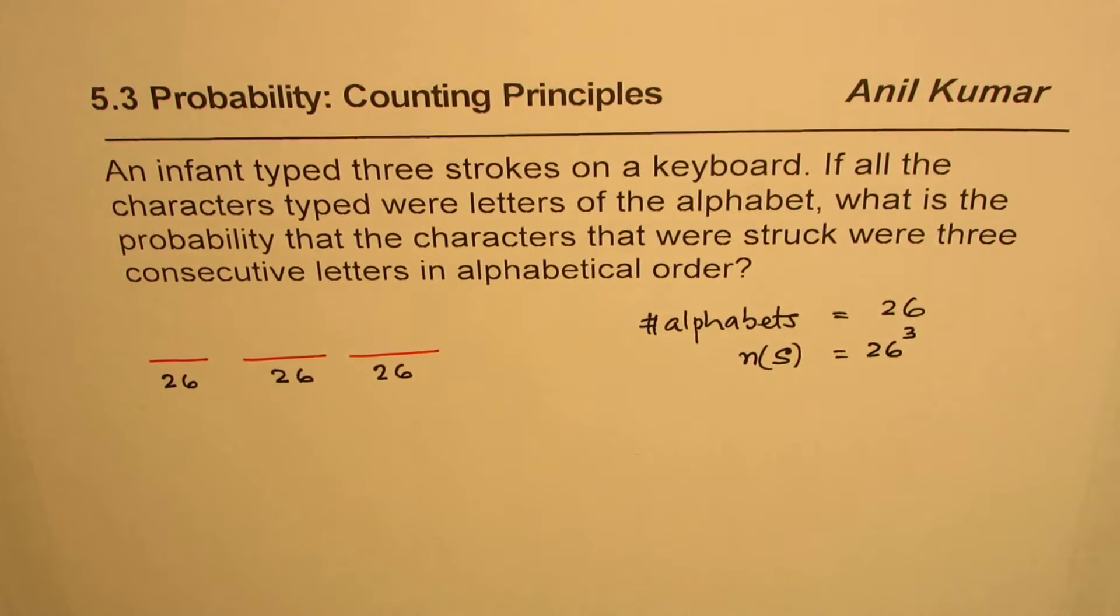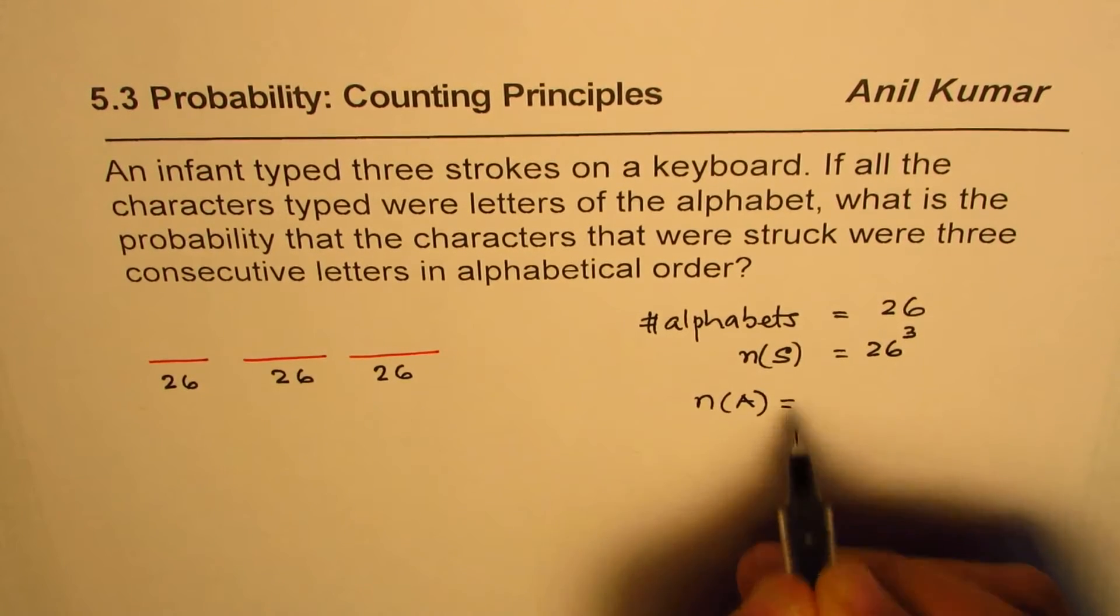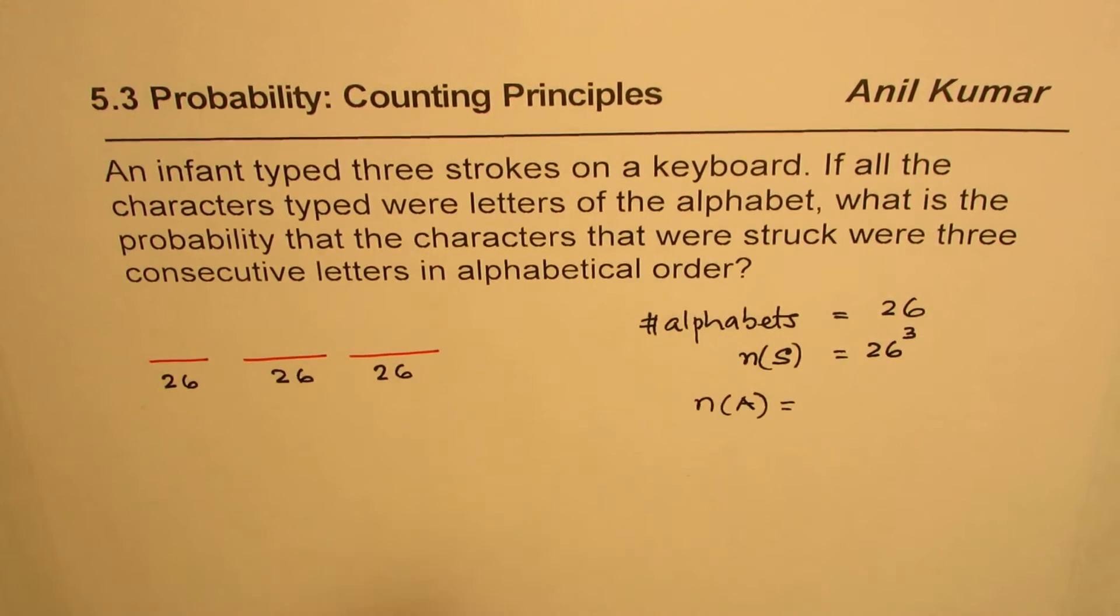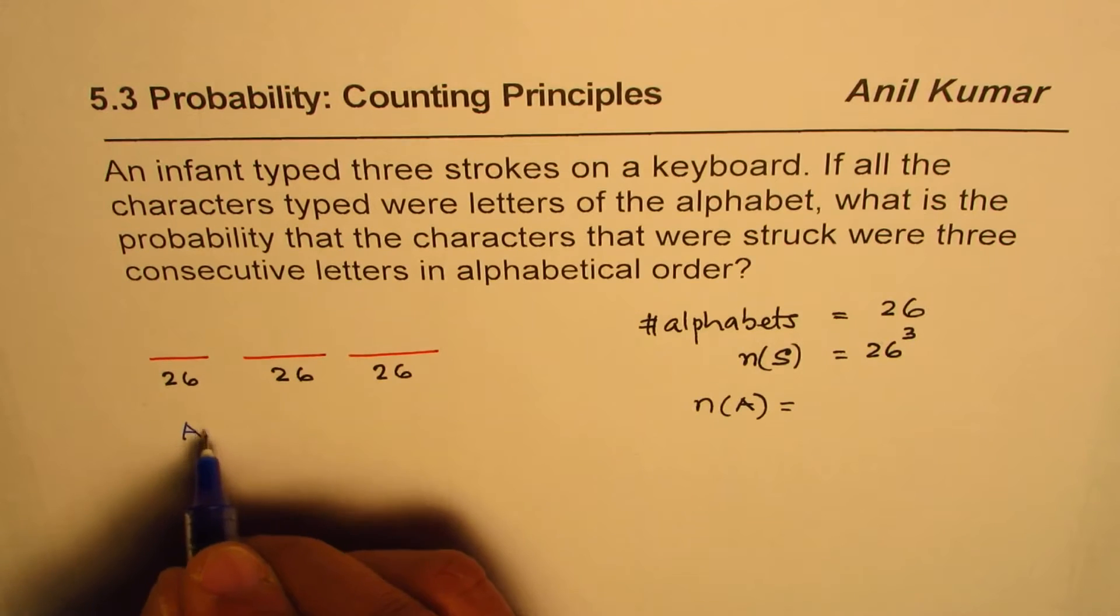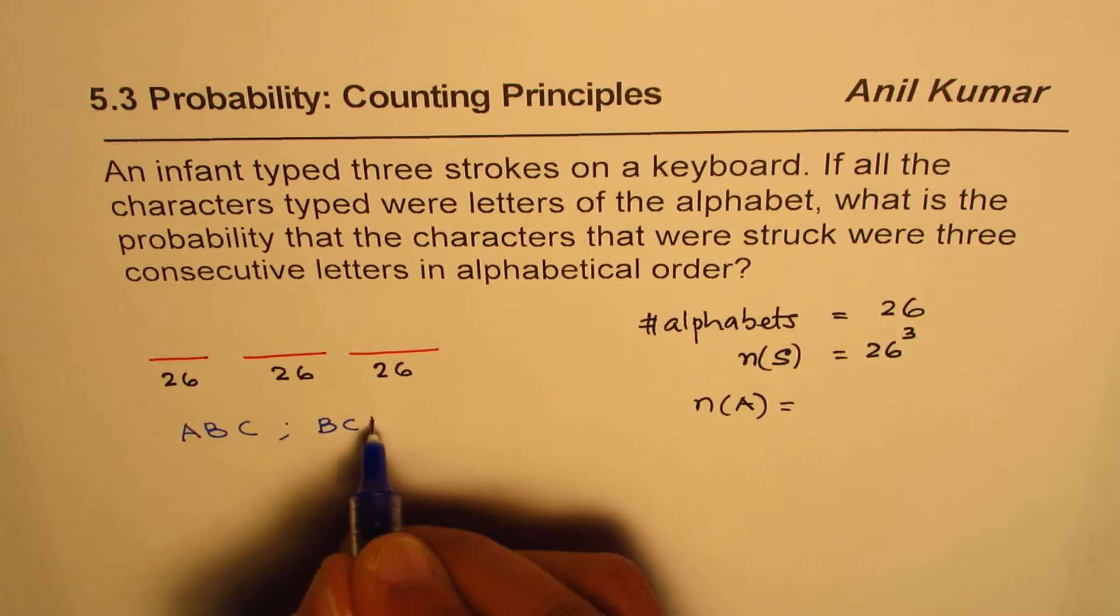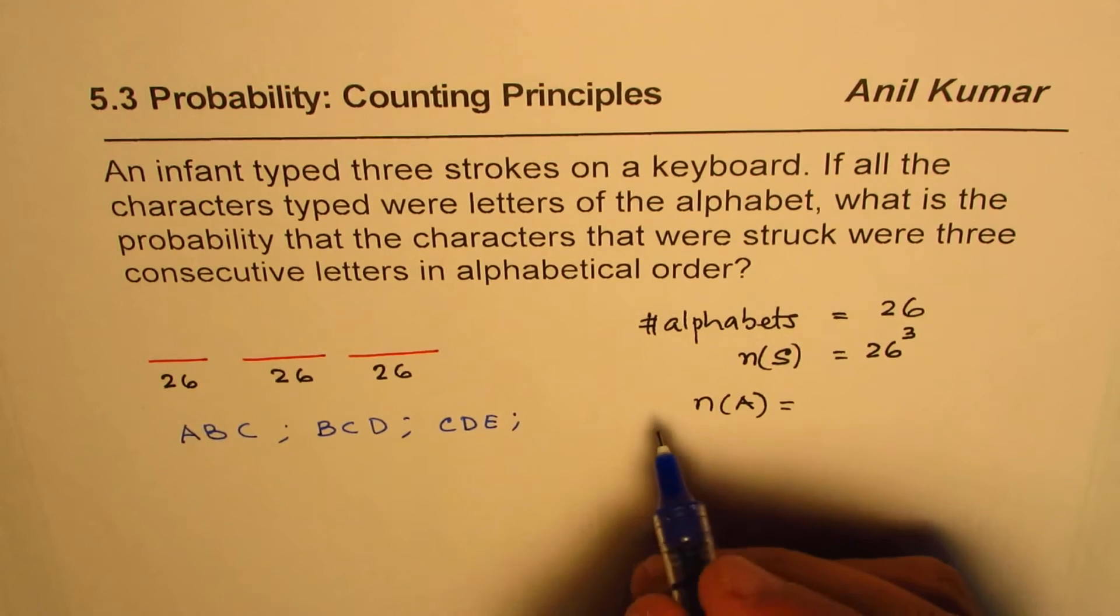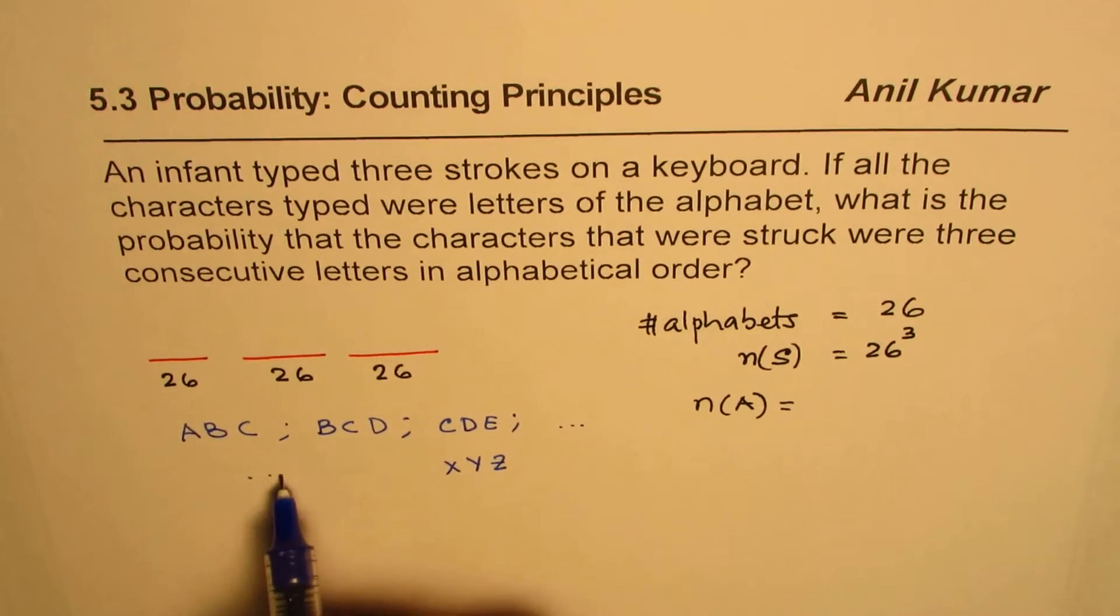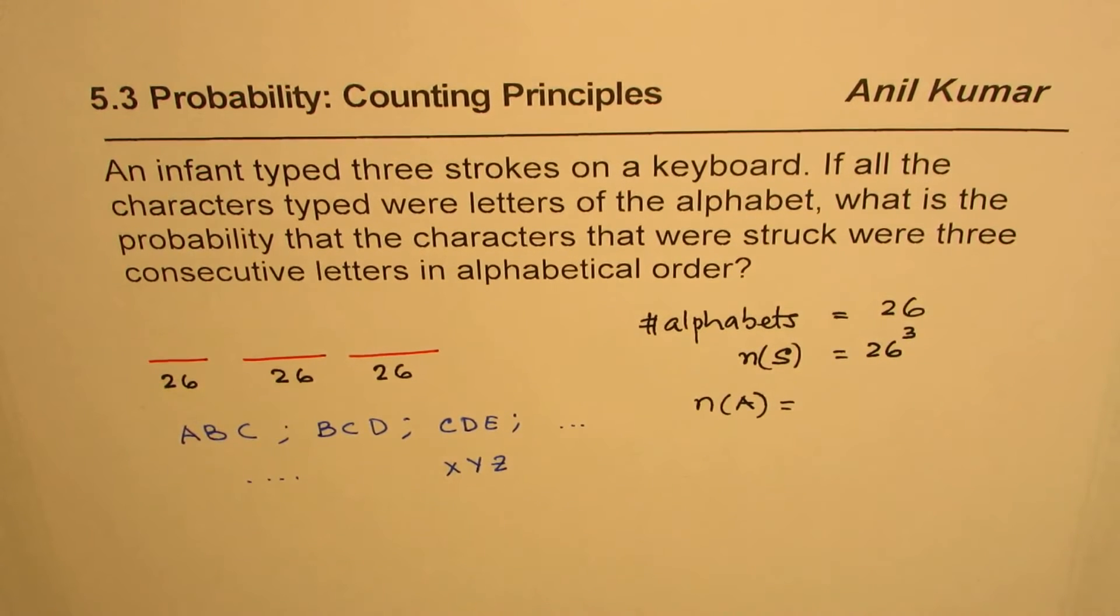So that is the total number. Now what we're talking about is the event A, that these alphabets are consecutive letters in alphabetical order. So what does that mean? Let's see that consecutive letters are like ABC, right? So likewise, the last will be XYZ. So likewise, we could have many.